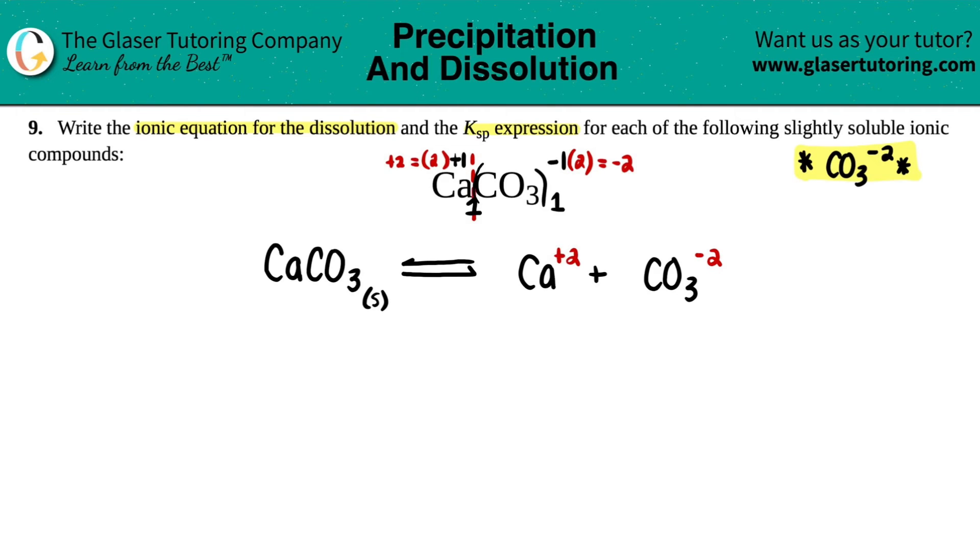And that charge is what we're going to put down for these. So calcium was originally a plus two charge and carbonate is always a negative two. Now, since we have the charges, these are going to be aqueous, what they break down. Now we just need to make sure that this is balanced, but looks like it is. There's one calcium, one calcium, one carbonate, one carbonate. So we don't have to add any coefficients.